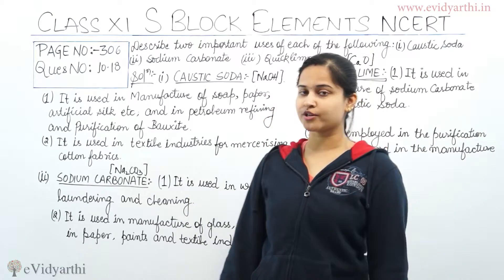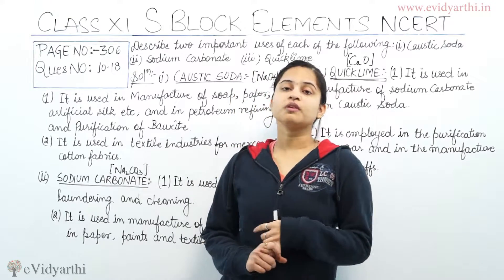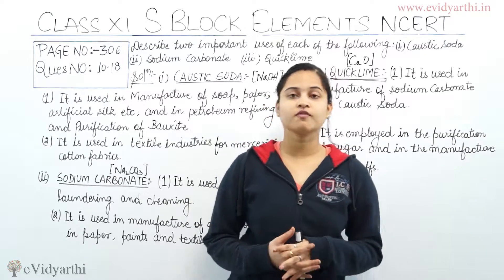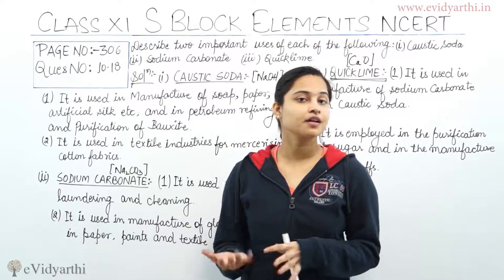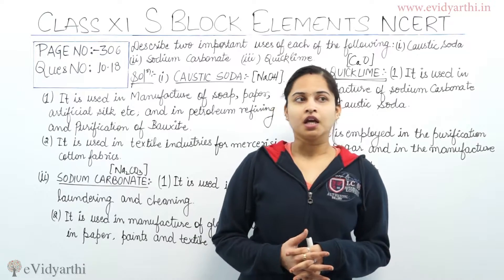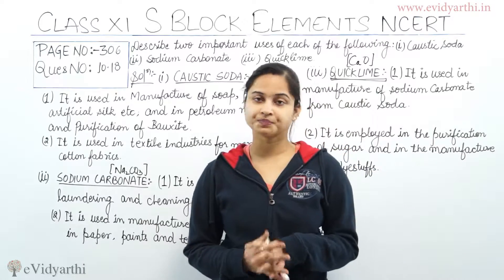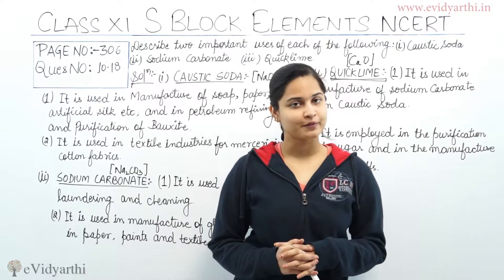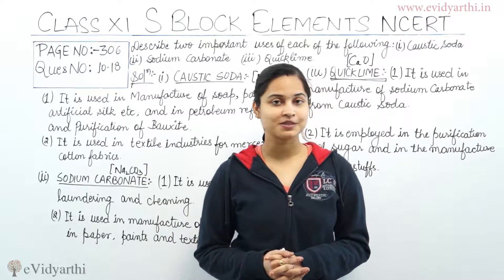Before starting the solution, I want to ask: what do you mean by caustic soda? What is the chemical formula of caustic soda, and what is the chemical formula of quicklime? Caustic soda is sodium hydroxide (NaOH), quicklime is calcium oxide (CaO), and sodium carbonate is Na₂CO₃.